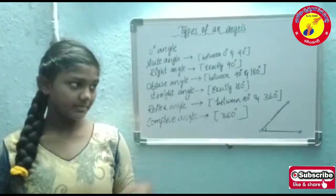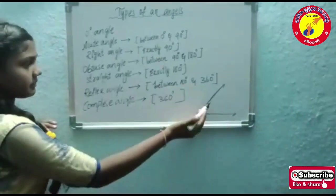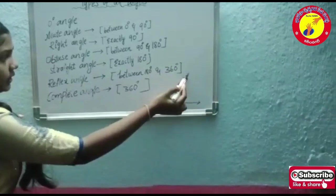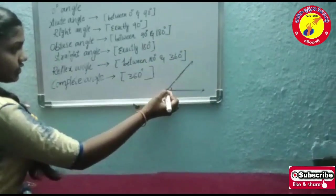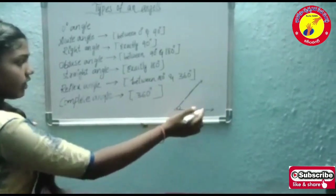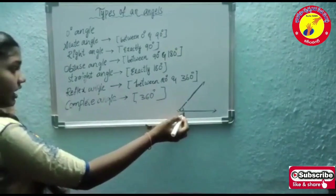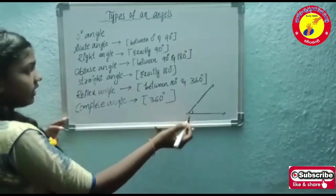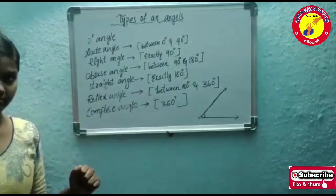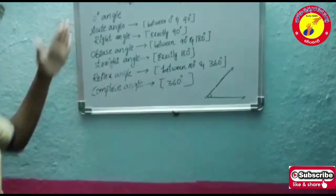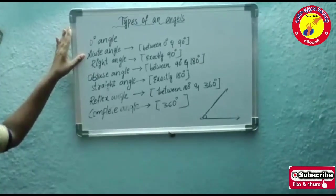What is an angle? Two rays meeting at a common point is called an angle. These two rays are called arms, and the common point is called the vertex.